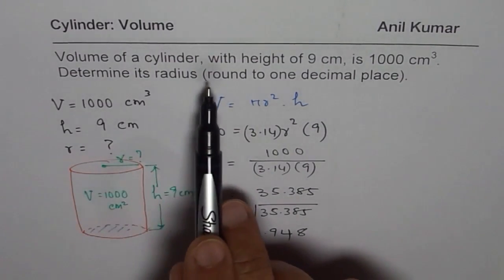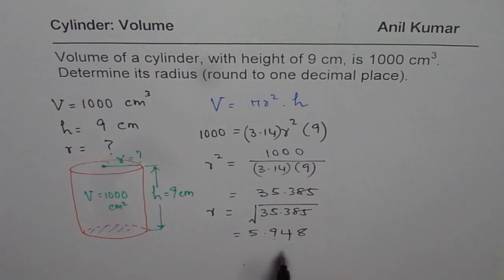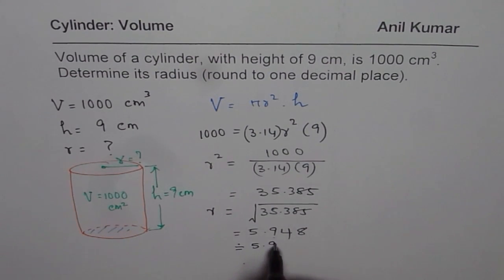It says determine its radius round to one decimal place. We'll round to this. Since 4 is less than 5, we could write this as 5.9 units are centimeters.